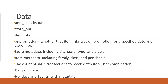Let's first look at the data. The data they provide includes unit sales at a given date - specifically the unit sales for a given store and item at that date. They also have a promotion column to indicate whether an item is on promotion, and store metadata including where the store is located.